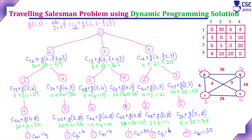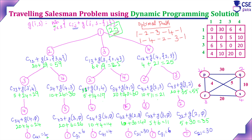Both routes through vertex 3 and vertex 4 give a cost of 25. From the starting city, the minimum of the three choices is 25. The optimal path is 1→3→2→4→1, and also 1→2→3→4→1, and another route 1→4→2→3→1, all with a minimum tour cost of 25. The salesman can choose any of these optimal routes.